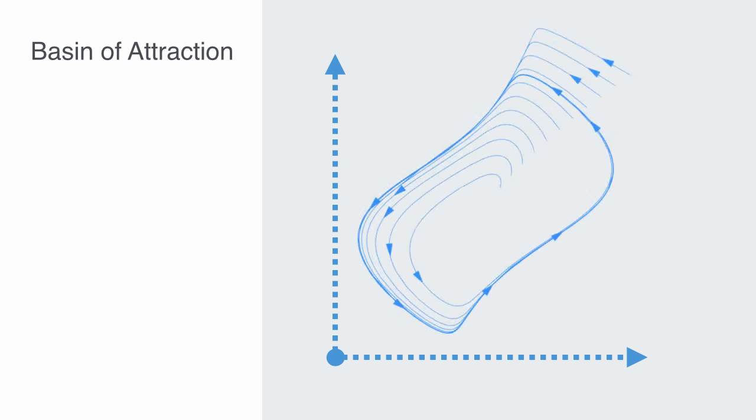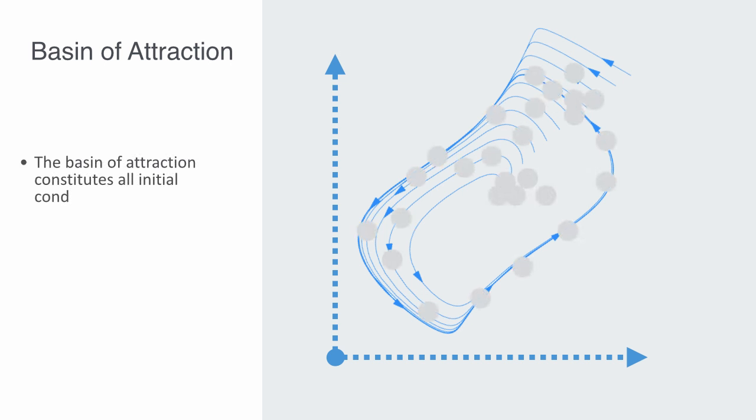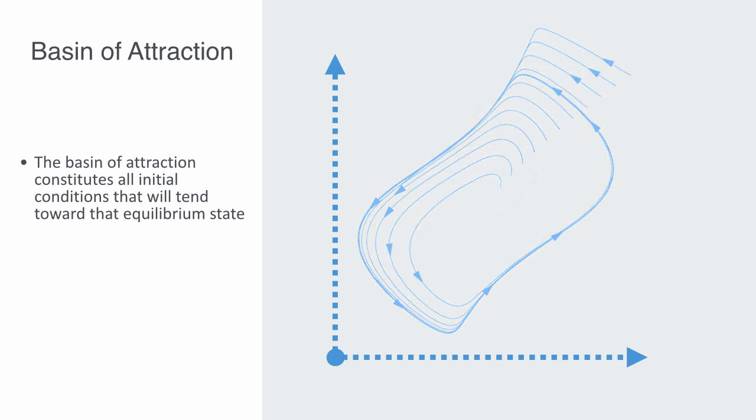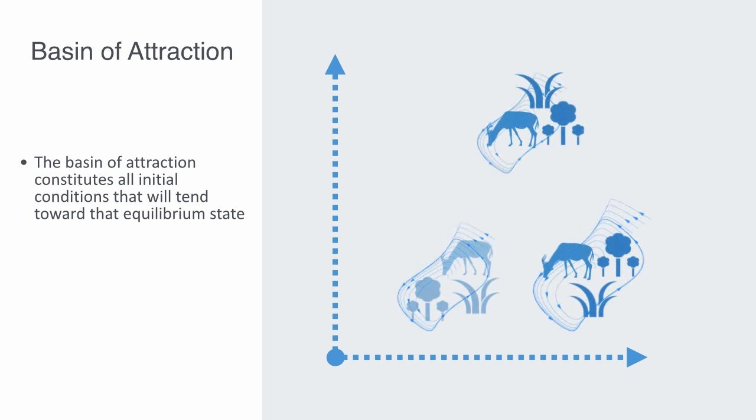A basin of attraction is a region in the state space in which the system tends to remain. For systems that tend towards an equilibrium, the equilibrium state is defined as an attractor. The basin of attraction constitutes all initial conditions that will tend towards the equilibrium state, with it being held within that equilibrium by negative feedback of some kind. There may be more than one such basin of attraction for any given system. For example, there may be two or more combinations to the amount of grass, shrubs, and livestock towards which a rangeland might tend, depending on the starting point.